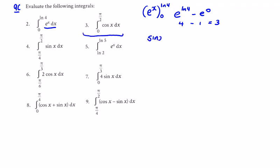For 3cos x — go back and check it, but cos x integrates to sin x. So we're going to get sin x evaluated between 90 and 0. Sin of 90 minus sin of 0 is 1 minus 0, which is just 1.